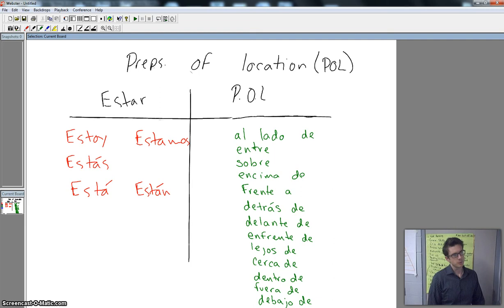The two points you need to remember right now is that we use estar with our prepositions of location, and that depending on what comes after the preposition of location, prepositions of location give a description of something's location in reference to something else, whether it is beside, something behind, under, on top of, close to, outside of, behind, that's what we're doing.